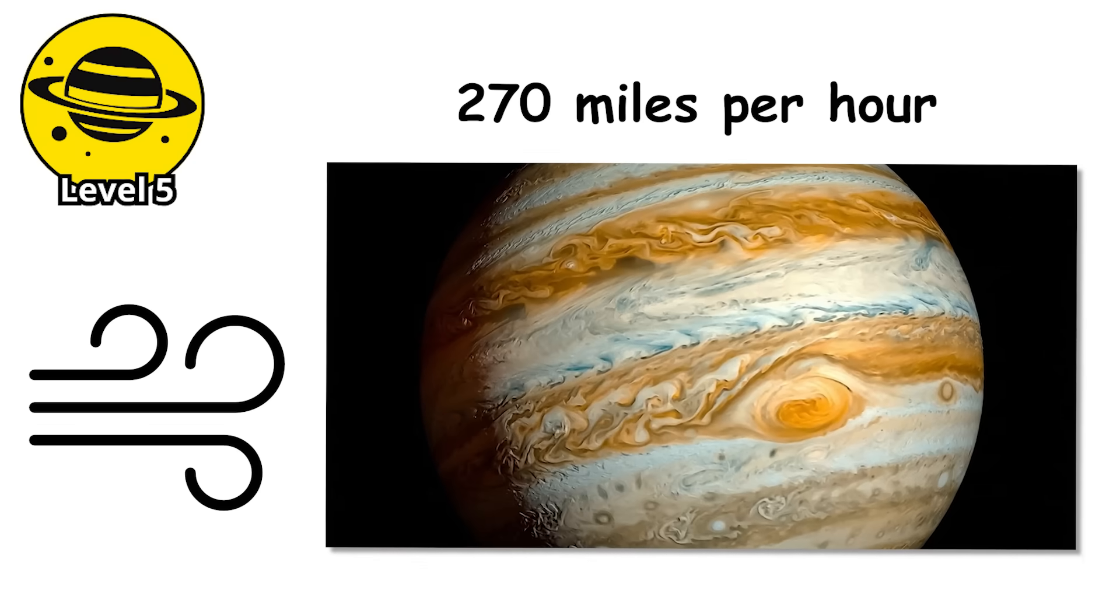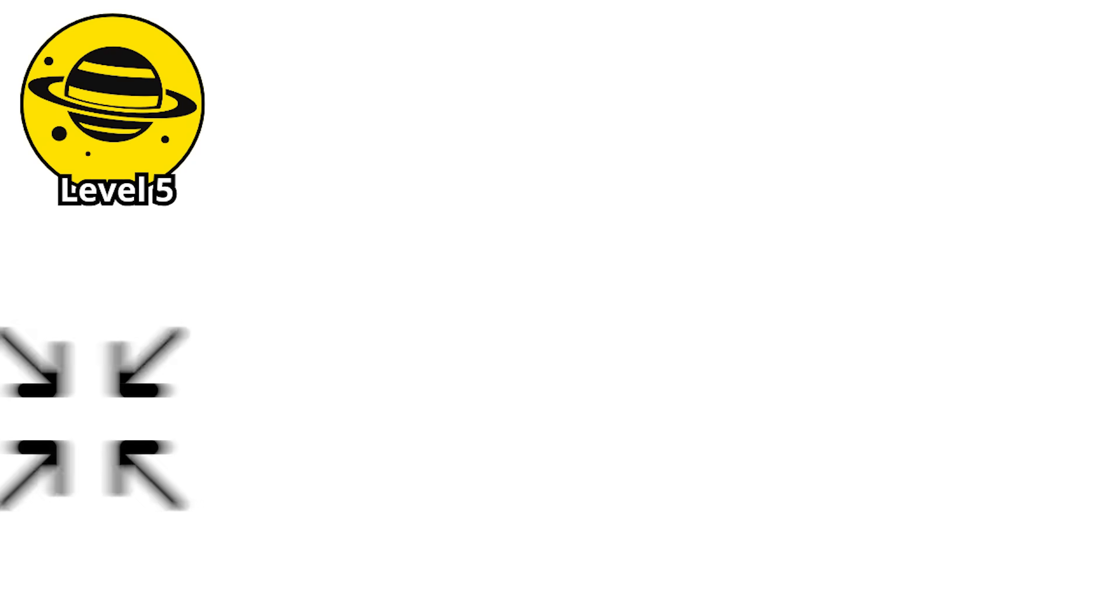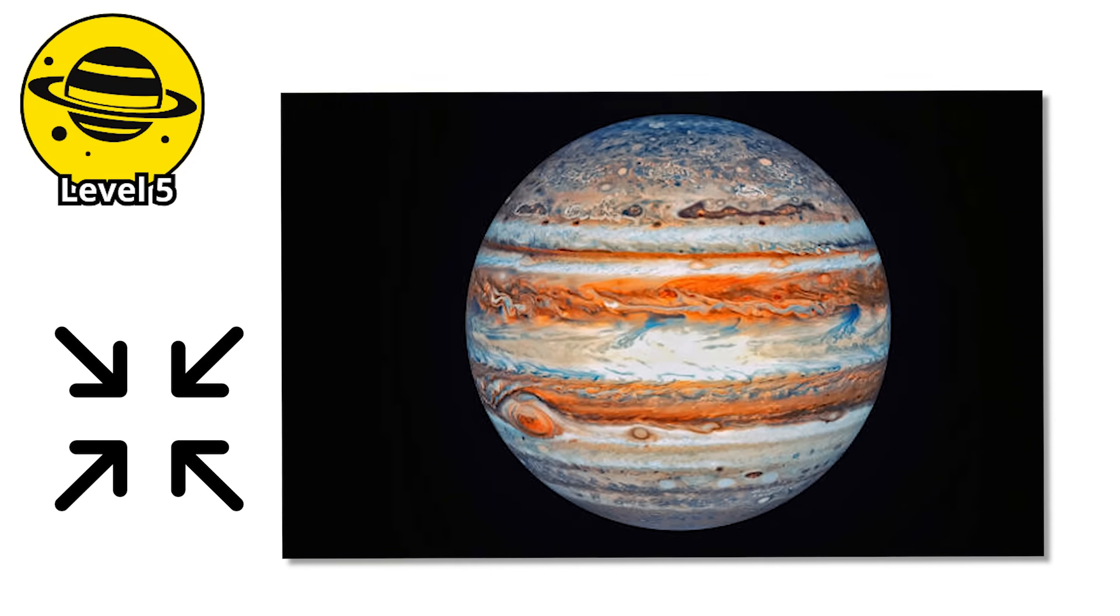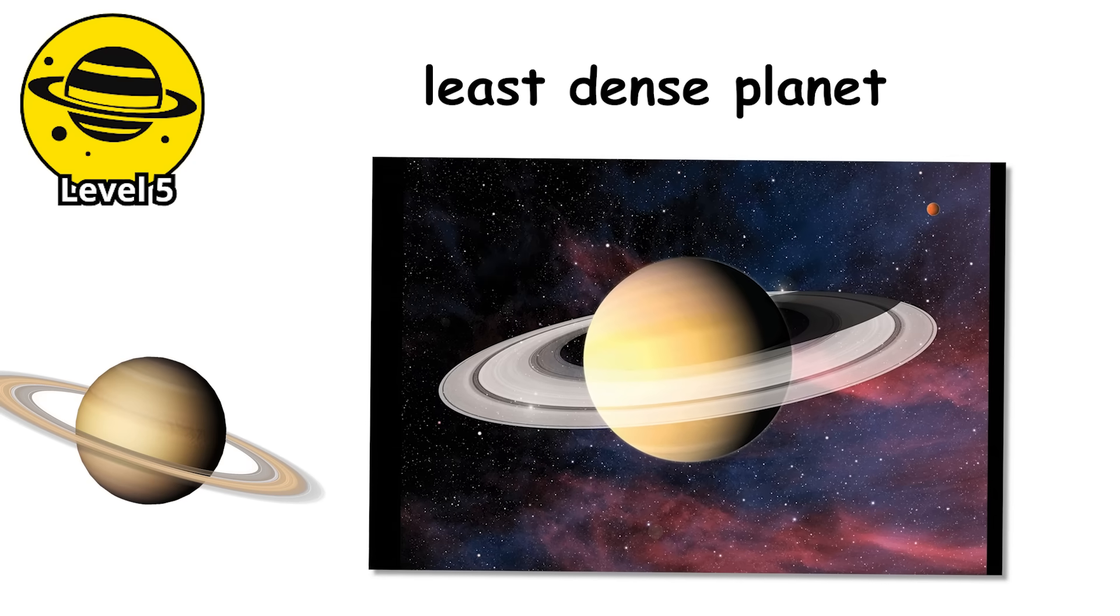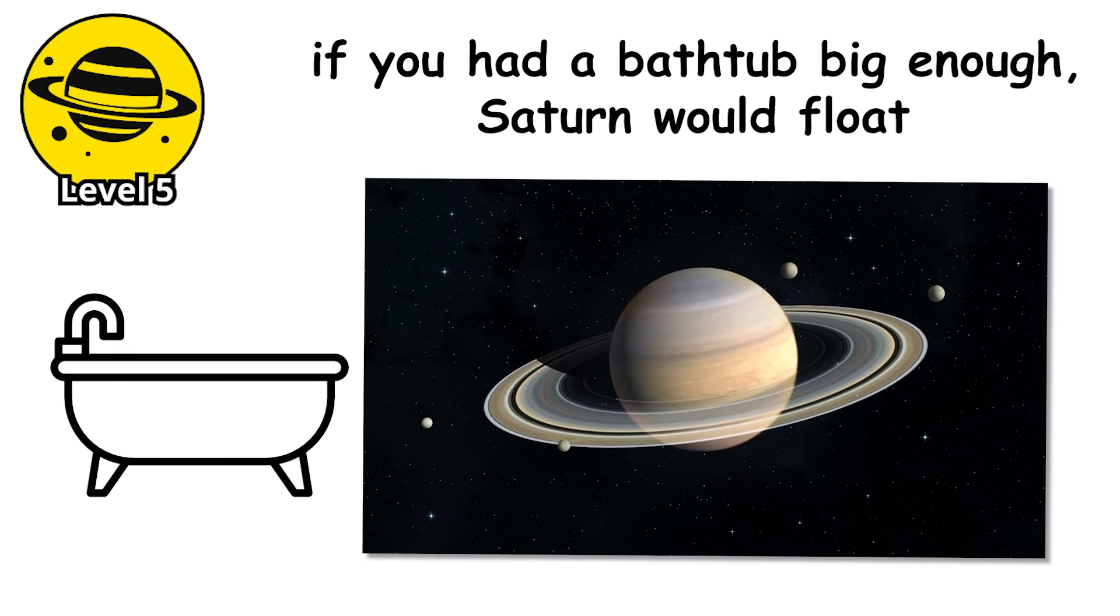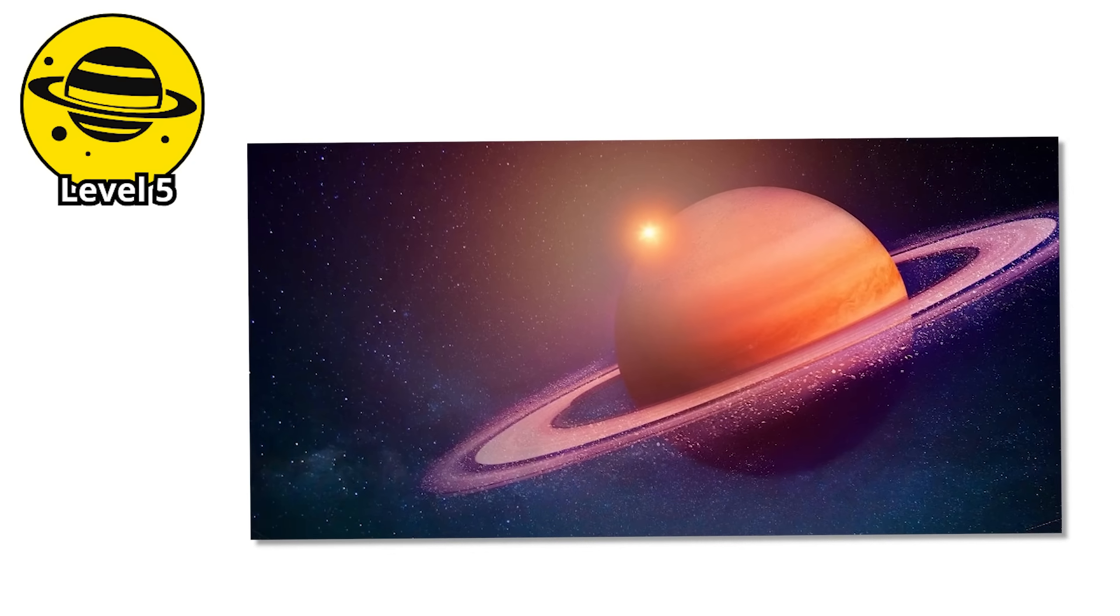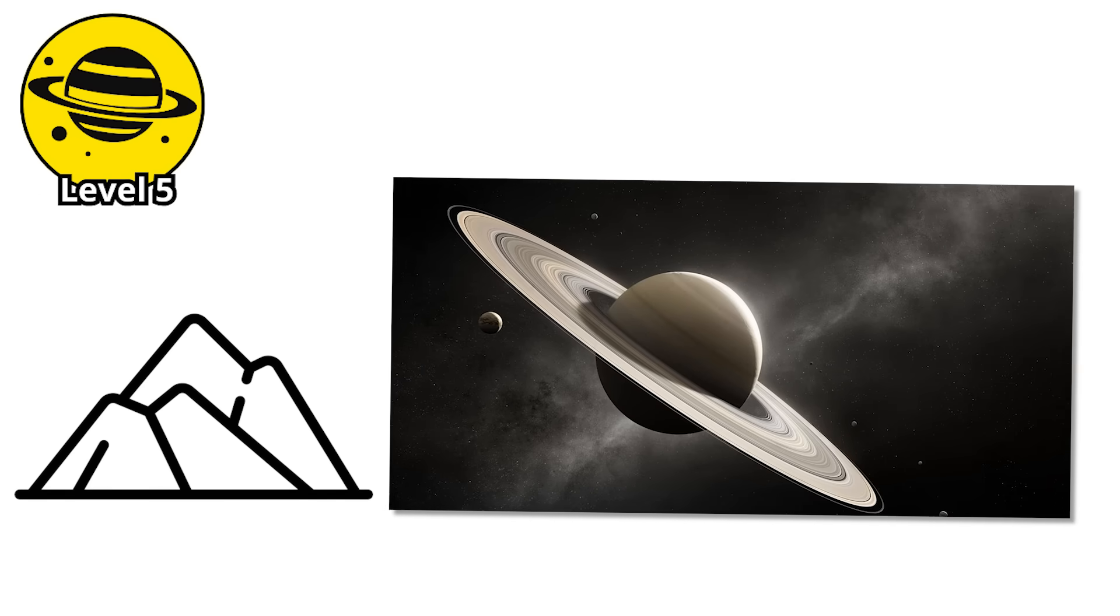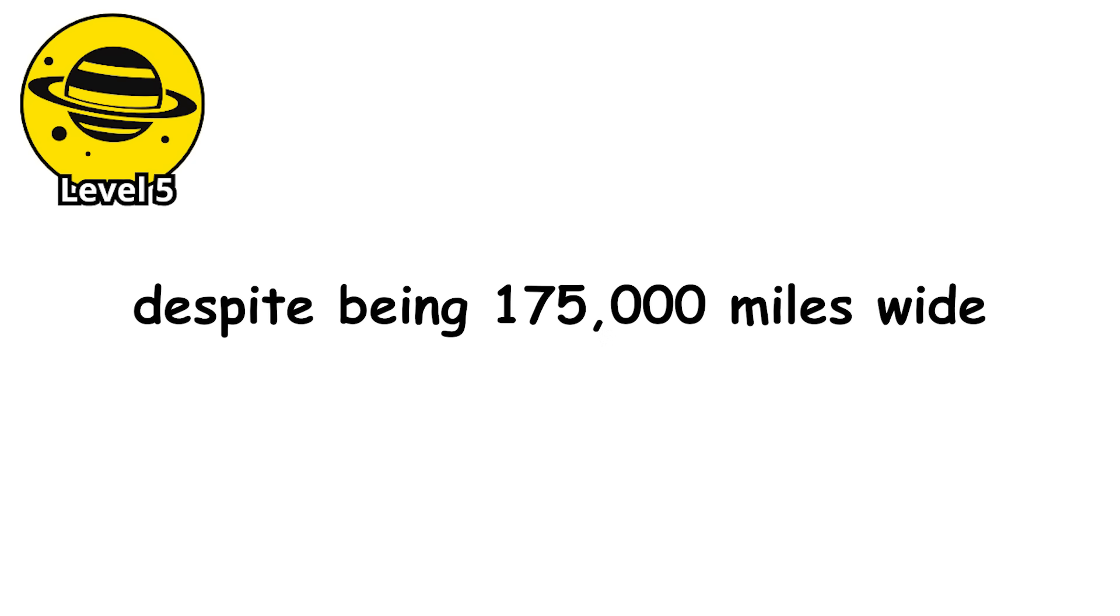The wind speeds reach 270 mph at the edges, and the whole thing rotates counterclockwise every six days. It's shrinking though, getting smaller year by year, and nobody knows if it'll eventually dissipate or restabilize. Saturn holds the title of least dense planet in our solar system. Its average density is actually less than water, which means if you had a bathtub big enough, Saturn would float. Those magnificent rings are made of ice particles ranging from dust-sized grains to chunks as large as mountains, all orbiting in a disk that's barely 30 feet thick in some places, despite being 175,000 miles wide.